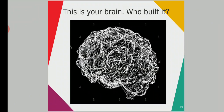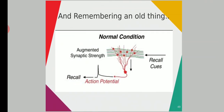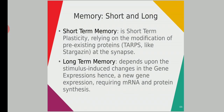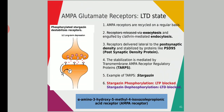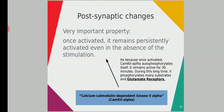Today we are going to address that question, but before that, yesterday we left our lecture at short-term memory. The mechanism is basically based on AMPA glutamate receptors, because glutamate is the memory neurotransmitter. The AMPA receptor is activated by CaMKII alpha.